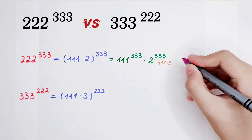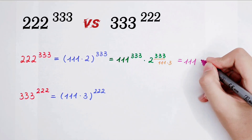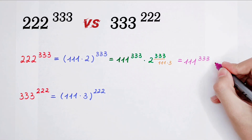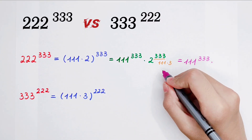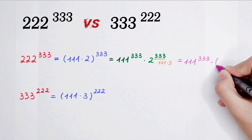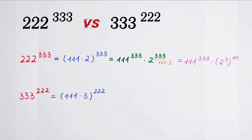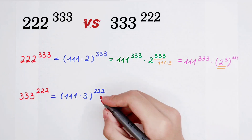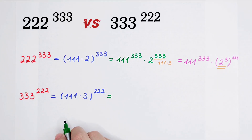Good. So we get 111 to the power of 333, and then times 2 to the power of 3, all to the power of 111. Now, 2 to the power of 3 is 8. Then we continue doing the second one.